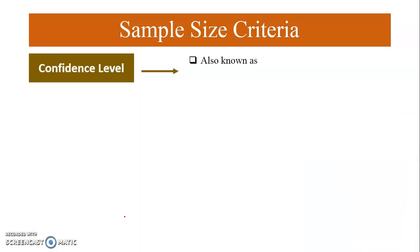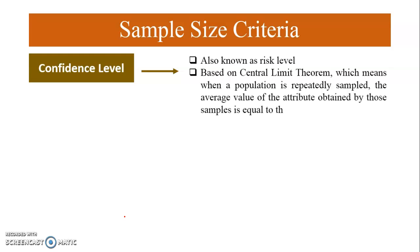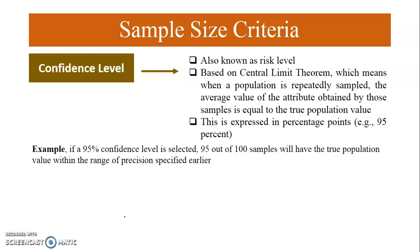The next criterion is confidence level, also known as risk level. It is based on the central limit theorem, which means that when a population is repeatedly sampled, the average value of the attributes obtained by those samples is equal to the true population value. It is expressed in percentage points — for example, 95%. If a 95% confidence level is selected, the researcher is confident that 95 out of 100 samples will have the true population value within the specified range of precision.